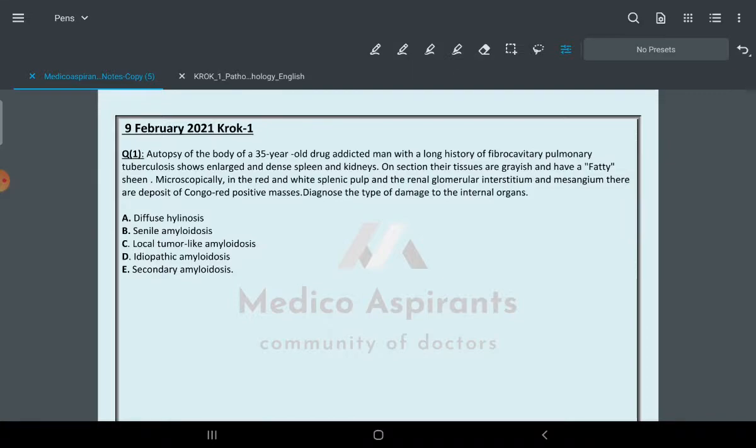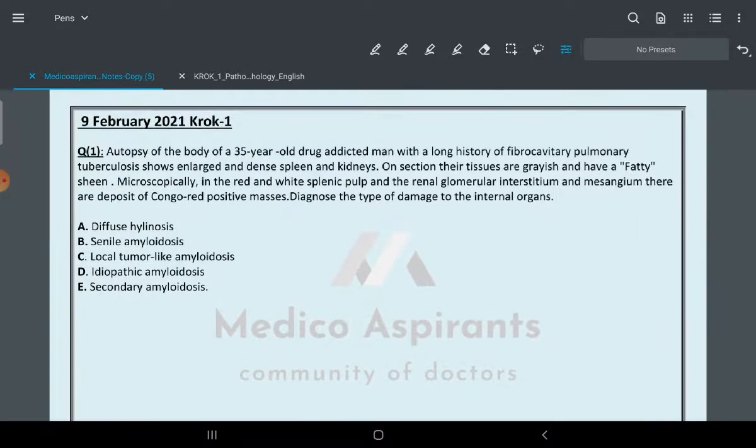The previous year, 9th February 2021 KROK 1 question exam. Starting from that question because it was most confusing. Autopsy of a 35-year-old drug addicted man with long history of fibrocavitary pulmonary tuberculosis shows enlarged dense spleen and kidney. On section, tissue is grease and has fatty sheen. Microscopically, red and white splenic pulp and renal glomerular interstitium and mesangium show deposits of Congo red positive mass. Diagnose the type of damage in the internal organ.